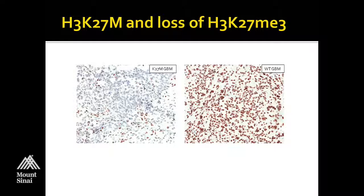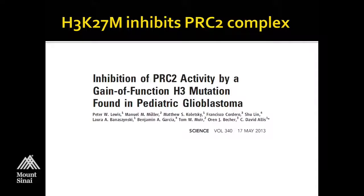The mechanism behind this has at least partially been worked out by David Alice's group, who showed that the K27M mutation actually leads to direct inhibition of the EZH2 enzyme in the PRC2 complex. If you have a methionine where you're supposed to have a lysine, you can't put methyl groups on it. What's happening is that the mutant histone traps EZH2 on that methionine residue and doesn't allow it to move along the DNA and keep depositing methyl groups on the next lysines.